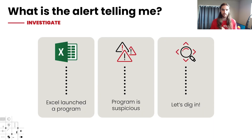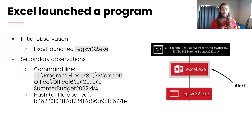The alert tells us that Excel launched a program, so we'll need to determine if Excel launched a program and what it was. Then we have to determine if that program is suspicious based on what the alert said, but we need to validate that on our own. To figure out what program was launched, we could put together a process tree — EDR tools will often provide that for us.